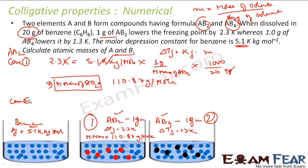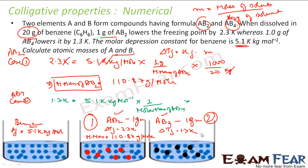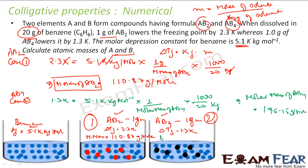Case 2 — AB4: ΔTf = 1.3 K = Kf × M(AB4) = 5.1 × (1 / M_AB4) / (20/1000). Solving this equation, the molar mass of AB4 is 196.15 g/mol.